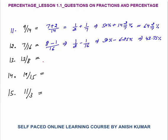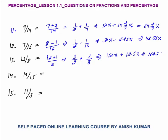13 by 8: break as 12 plus 1 by 8. Then 12/8 is 3/2, plus 1/8. We know 1/2 is 50%, so 3/2 is 150%, plus 1/8 which is 12.5%. So the final answer is 162.5%.